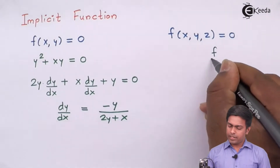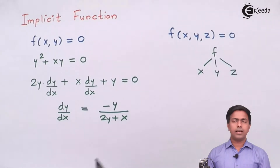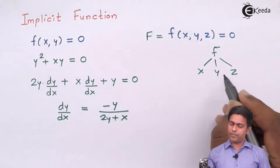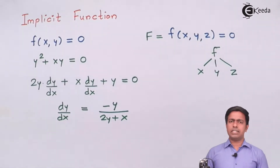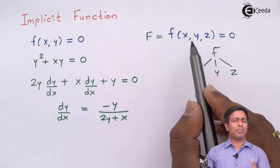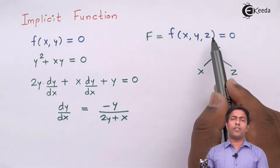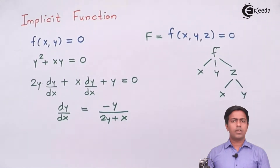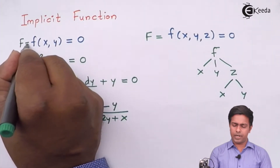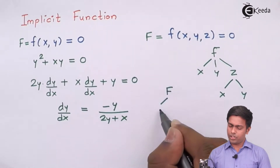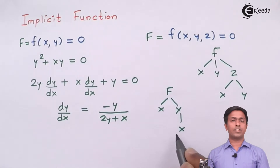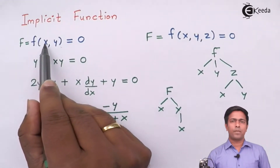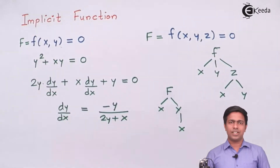Here, f is a function of x, y, and z. An implicit function is when we have a given function with multiple variables and one of the variables is a function of the other two. For example, z is a function of x and y. Or if we consider f as a function of x and y, then y is again a function of x. So f depends on x and y, and that y depends on another variable — such a function is called an implicit function.